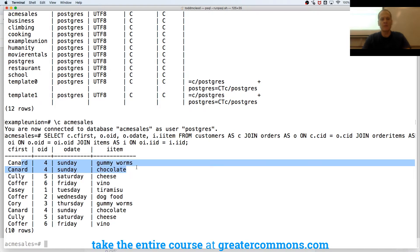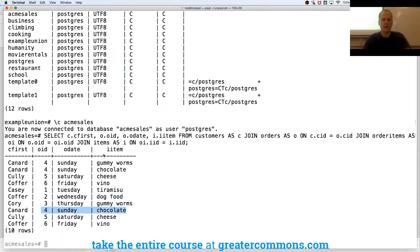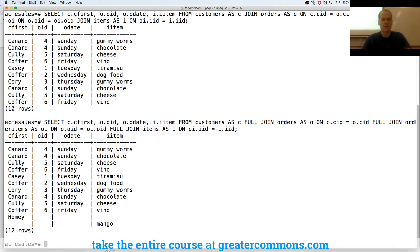So Order ID 4 had two items. No, three, had three items. So I could sort by Order ID. Did I do that? What's the difference here? Oh, I did Full Join, Full Joins, and it showed me things that weren't included. Honey, Homie never ordered anything, and Mango was never ordered.